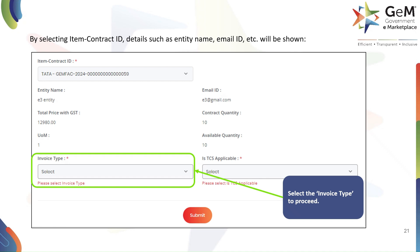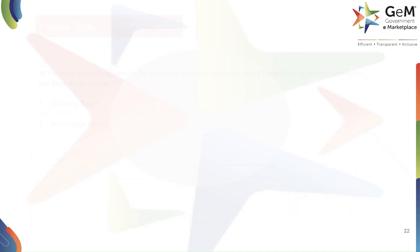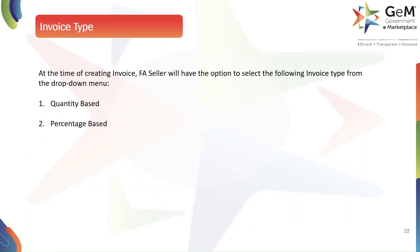The next critical step is to select the invoice type. You will be given two options from the drop-down menu: Quantity Based and Percentage Based. Quantity Based is used when you are invoicing a specific number of items that have been delivered. Percentage Based is used when you are invoicing for a percentage of the total contract value, which is common for milestone payments or partial deliveries.